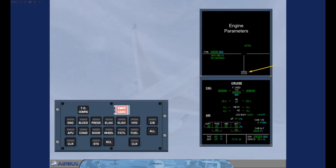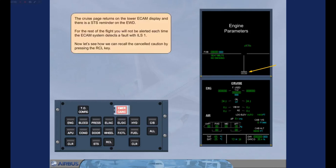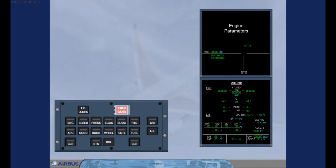Now let's see how we can recall the cancelled caution by pressing the recall key. If you press and hold the recall key for more than three seconds, the suppression function is removed and the original caution will reappear if the fault is detected.